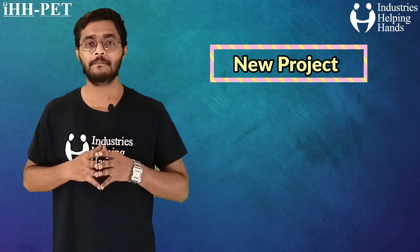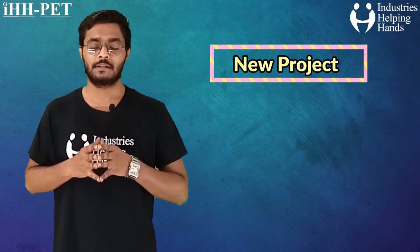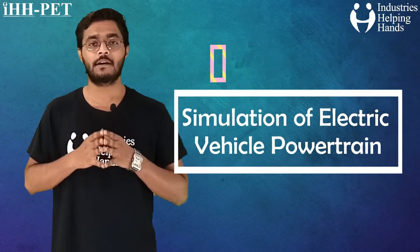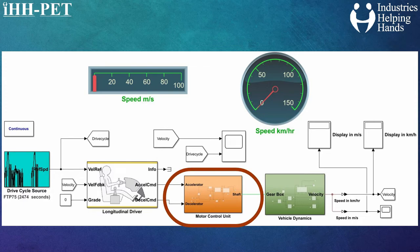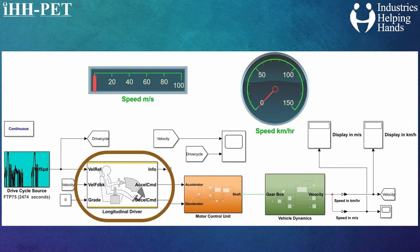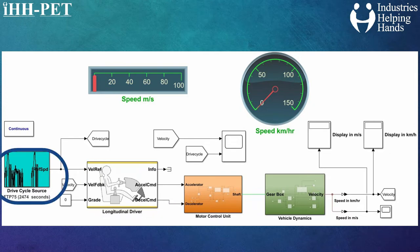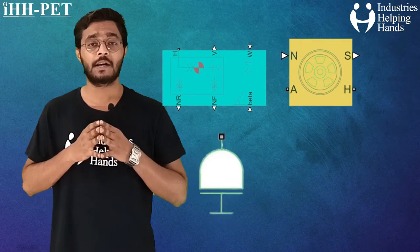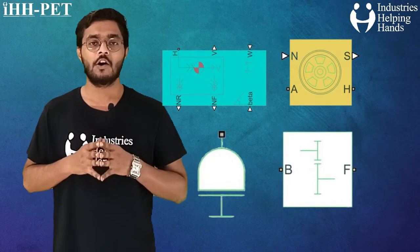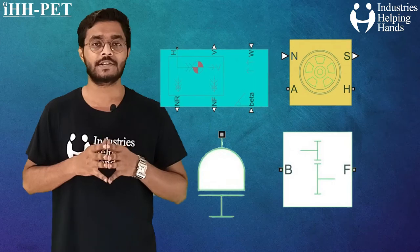The new project we are going to begin on our MATLAB simulation is the simulation of an electric vehicle powertrain, in which we will implement different subsystems like vehicle dynamics, motor control unit, along with the longitudinal driver block and FTP 75 drive cycle as the input. These are certain vehicle dynamics blocks like vehicle body, tire inertia, and simple gear, which we have already discussed in our previous simulation project.